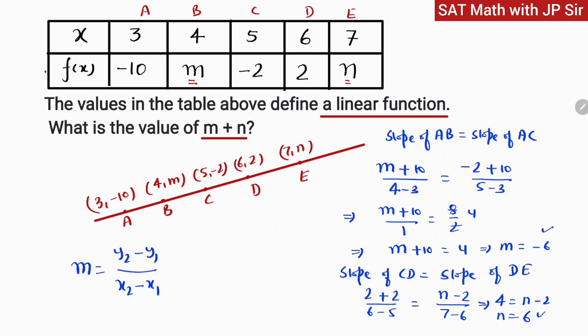n is plus 6. What is asked in the question? m plus n. So it means it is minus 6 plus 6, and thus that is 0. So our answer is 0.